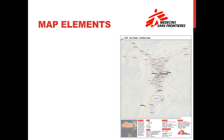A good map includes at least most of the following map elements. 1. A map title. An effective map title succinctly describes what the map shows or the purpose of the map. The map on the right's title does just that: TCD Amtiman Context Map. TCD is the alpha-3 code for Chad. Amtiman is the city on the map, and the map is a context map. The title follows the MSF map title convention: country, followed by place on the map, followed by map subject or purpose.